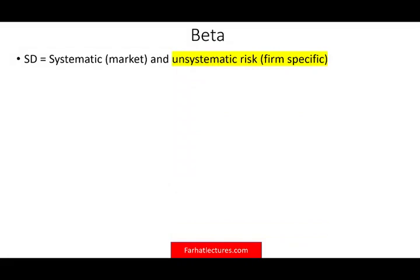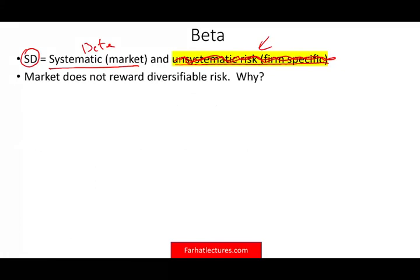Now we need to talk about beta. When you want to measure risk, you compute the standard deviation. The standard deviation of a stock has two components: a systematic risk and an unsystematic firm-specific risk. Beta is the systematic risk — it's the market risk, the risk that you cannot diversify. The unsystematic risk is the firm-specific risk, and with enough diversification, the assumption is we can get rid of it. Therefore, the market does not reward you for unsystematic risk.